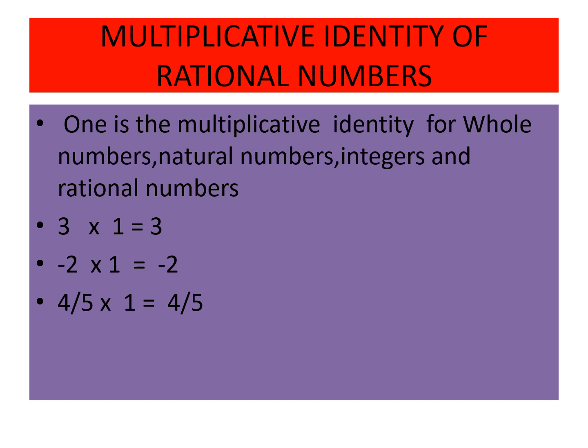Next, the multiplicative identity. When we multiply a number by something and get the same number, that is the multiplicative identity. For example, 3 × 1 = 3. The multiplicative identity is 1 — this applies to whole numbers, natural numbers, integers, and rational numbers.